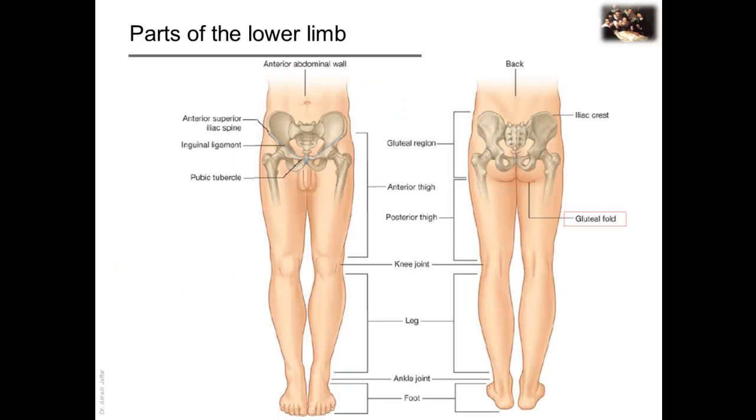The lower limb is divided into the gluteal region, thigh, leg, and foot.